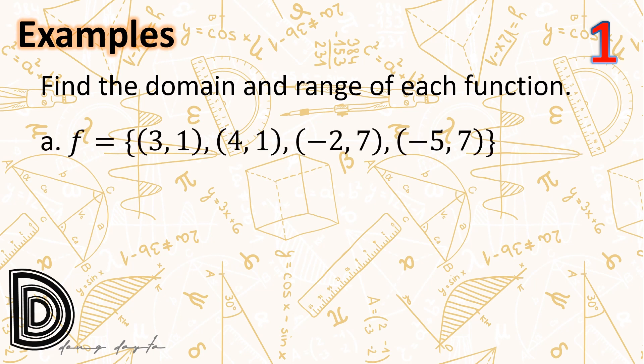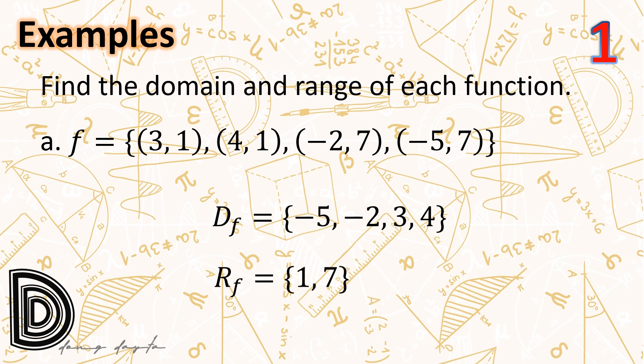Letter A: set F is the set of ordered pairs {(3,1), (4,1), (-2,7), (-5,7)}. The domain of F consists of all the x-coordinates, so D sub F equals {-5, -2, 3, 4}. The range of F consists of all the y-coordinates, so the range of F equals {1, 7}.